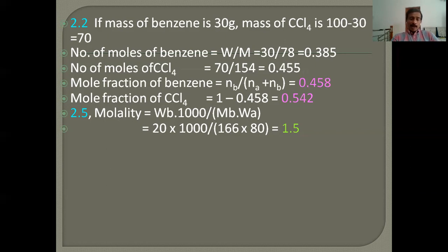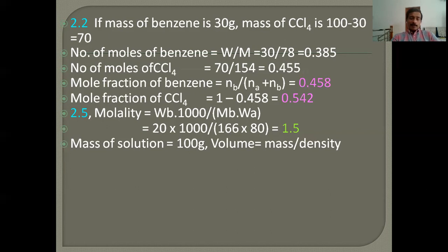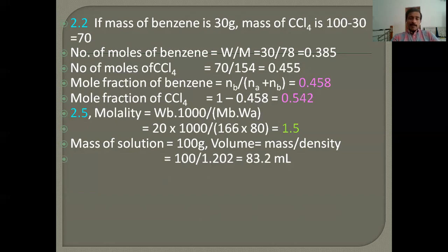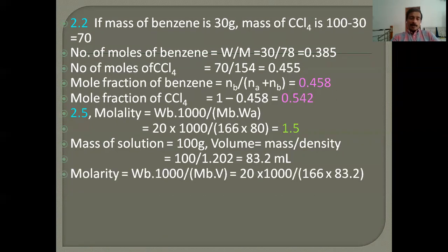To find molarity, calculate volume of solution: V = mass / density = 100 / 1.202 = 83.2 mL. Molarity = W_B × 1000 / (M_B × V) = 20 × 1000 / (166 × 83.2) = 1.44 mol/L.